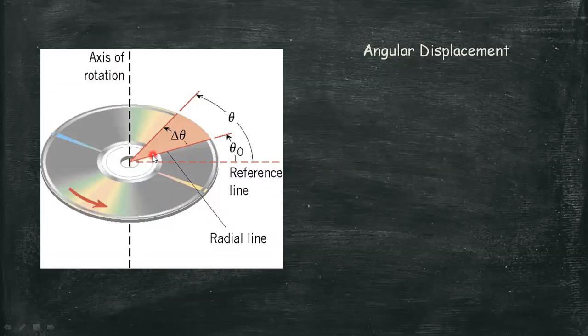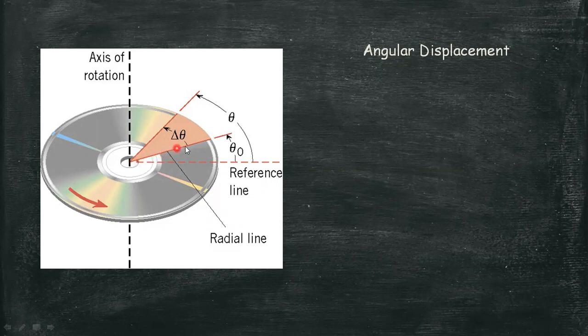So in the given illustration, this line is our initial position that makes an angle we will consider as the initial angle, then it turns up to this line that makes an angle of theta. So the difference between these angles is what we call the angular displacement.